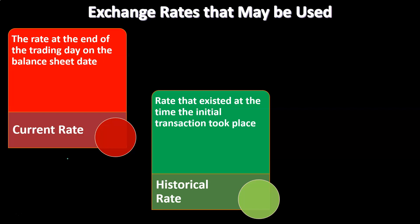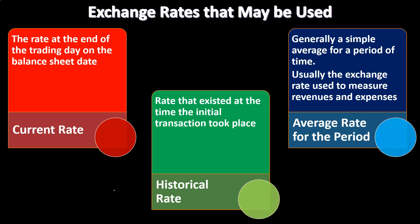We could use the historical rate — that's the rate that exists at the time the initial transaction took place. This often makes sense when we're talking about situations like buying equipment or fixed assets, property, plant and equipment — large purchases on the books. Maybe we should be putting those on the books at the rate in effect at the time the transaction took place, so we would argue for the historical rate there.